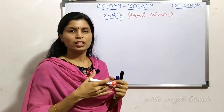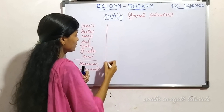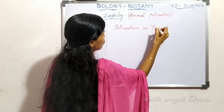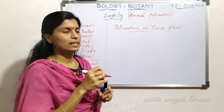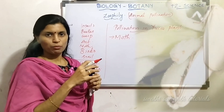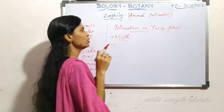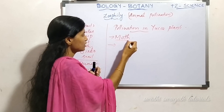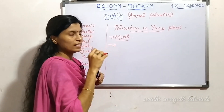An example of zoophily is the yucca plant. In the yucca plant, pollination is helped by one special type of moth. This moth performs pollination in the yucca plant.